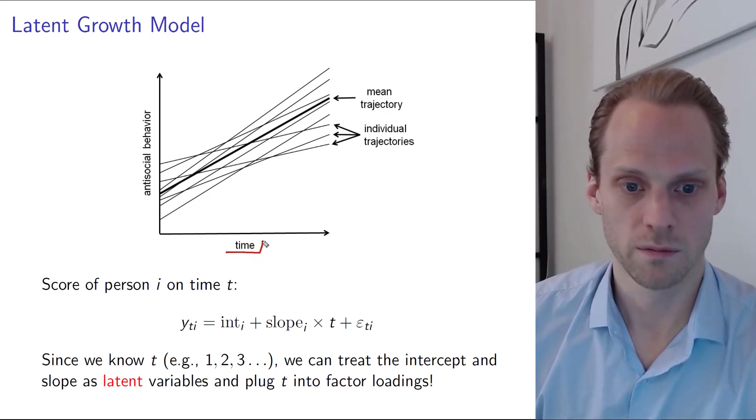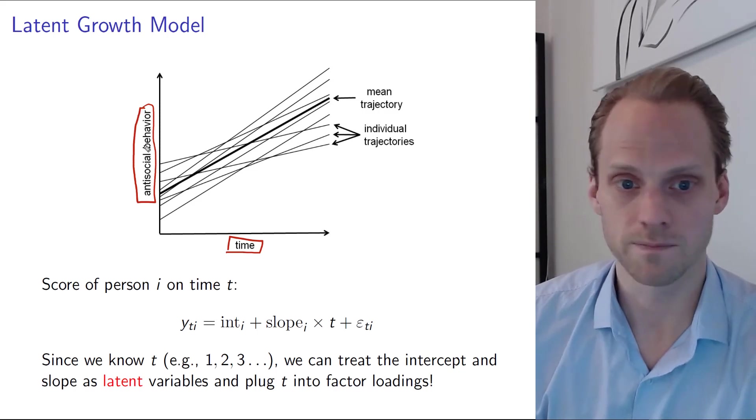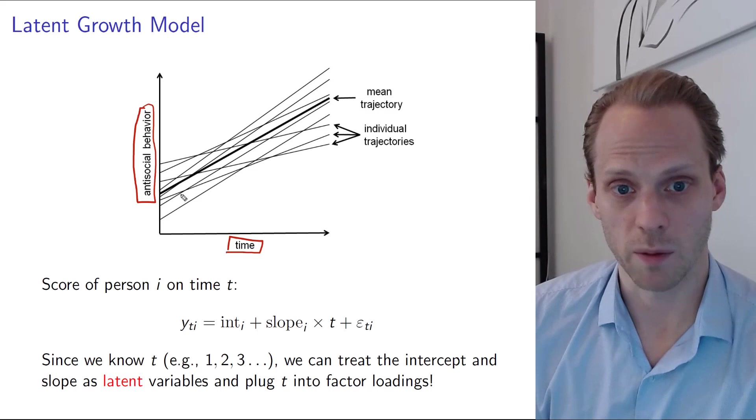So we have time here on an x-axis, and we have some sort of dependent variable that we're interested in, the thing that we measured. And we might want to know how do people develop over time.